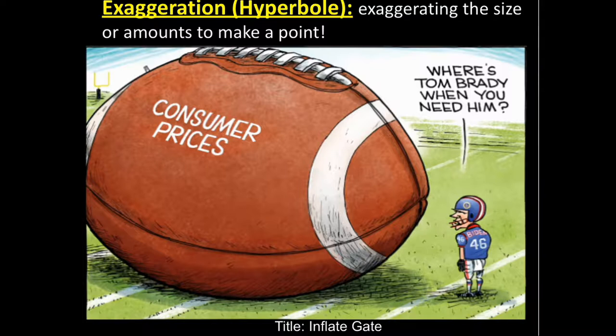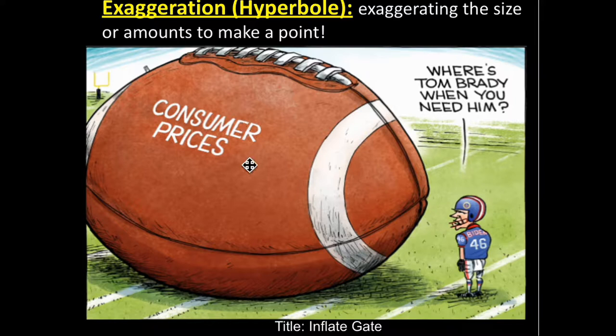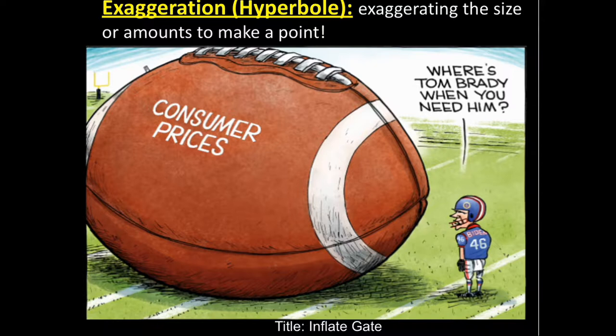Let's look at this example: Flategate. When I look at what's going on in this scene, I see that it looks like a football game is going on but has stopped for a minute. When I look closer, I can see that it is President Joe Biden who is on the field and he's approaching the football, which is labeled 'consumer prices.' He asks, 'Where is Tom Brady when you need him?' When I put this all together, I get that consumer prices are highly inflated right now and that it's a problem enough that it could stop him from playing the game. The reference to Tom Brady is making fun of that idea of inflation as well. This exaggeration helps us better understand the cartoon.